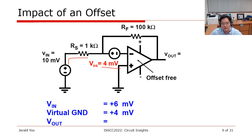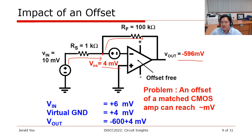With 4 mV of offset, the virtual ground node is no longer zero. The difference becomes 6 mV over the source resistance of 1 kΩ, and the result is now only −600 mV. So just 4 millivolts of offset incurs around 40% degradation in gain. The offset, however small, has a huge impact on the output. Since biopotential signals have a very small source, that gain degradation is a huge problem. And an offset of a matched CMOS amplifier can reach up to the millivolt range, so we have to do something about it.